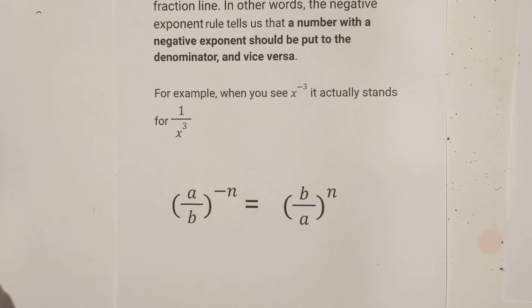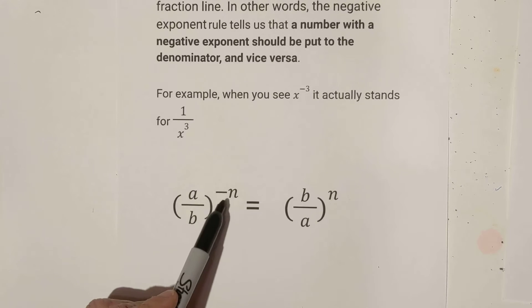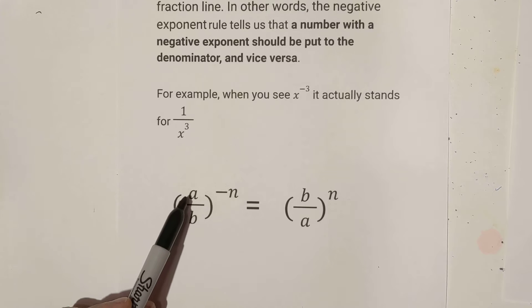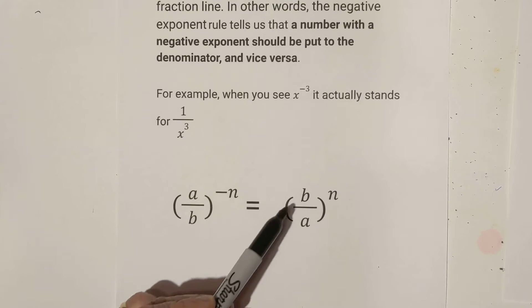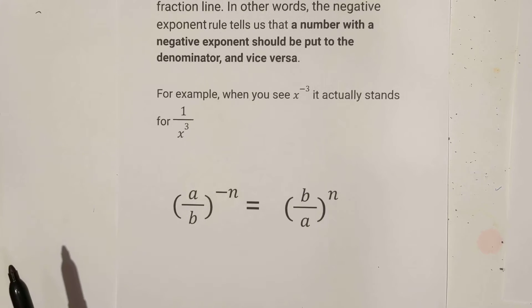A lot of times you will see it in a situation like this with it outside the parentheses. So basically, a over b to the negative n equals b over a to n.